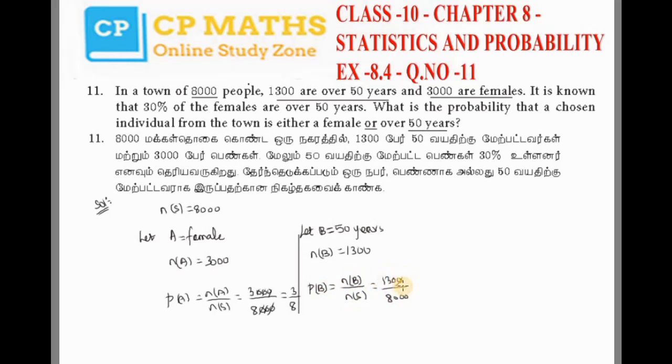Cancel by 200 - 200 cancels out. Balance will be 13 by 80. Okay, fine.